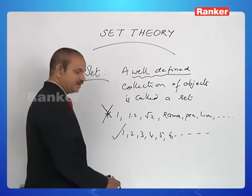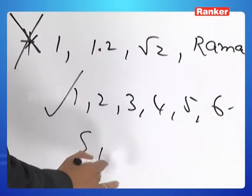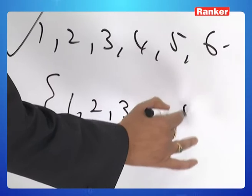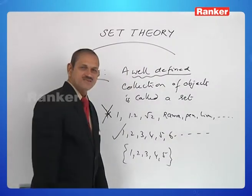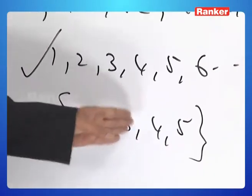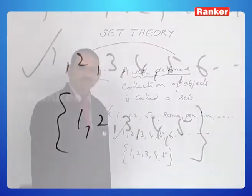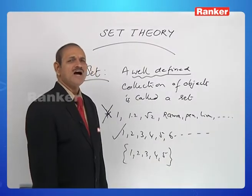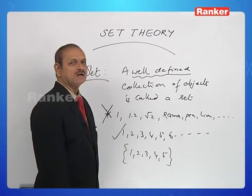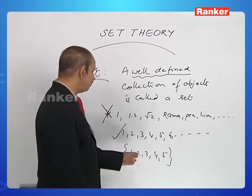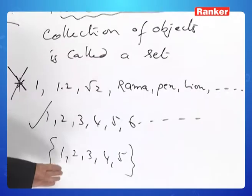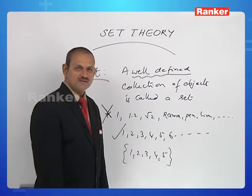We shall usually represent a set within curly brackets, for example {1, 2, 3, 4, 5}. This is a set containing 5 objects. The objects of the set are called elements of the set. There are 5 elements in this set.